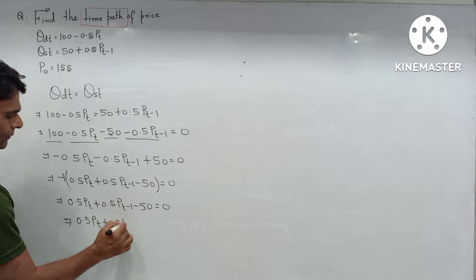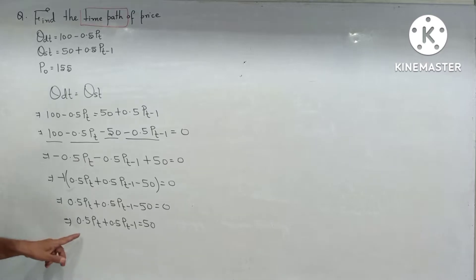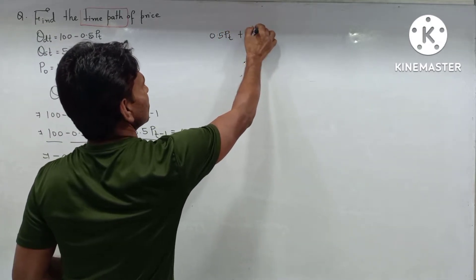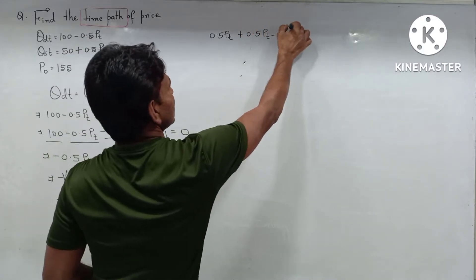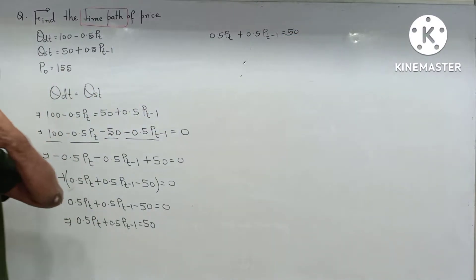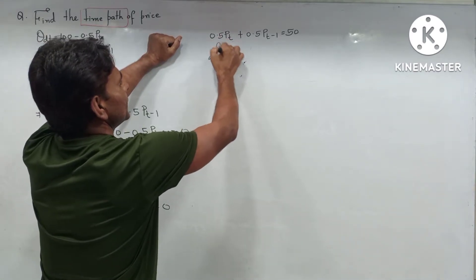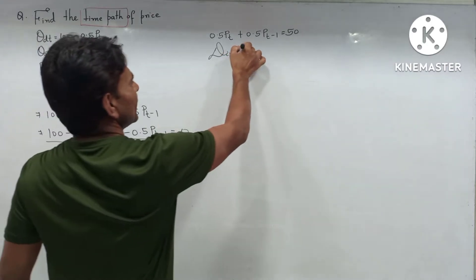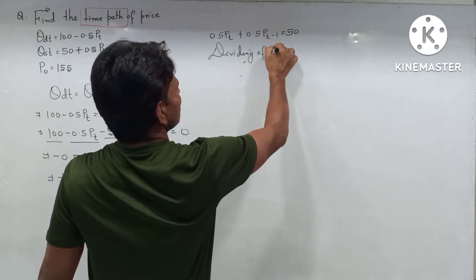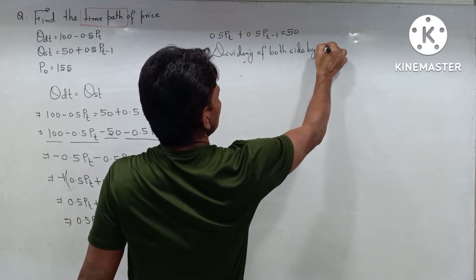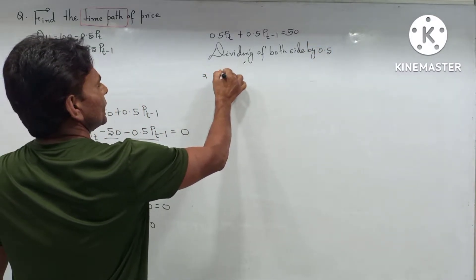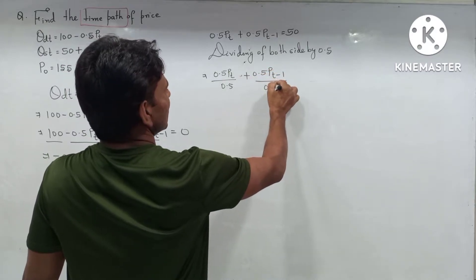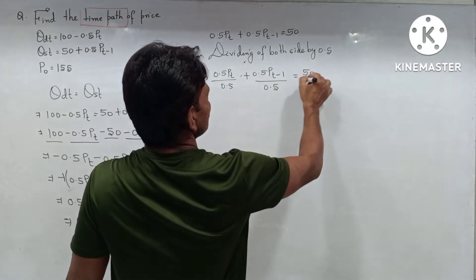This gives us 0.5·p(t) + 0.5·p(t-1) = 50. Dividing both sides by 0.5 to remove the coefficient from p(t): 0.5·p(t)/0.5 + 0.5·p(t-1)/0.5 = 50/0.5. The 0.5 terms cancel, giving us p(t) + p(t-1) = 100.